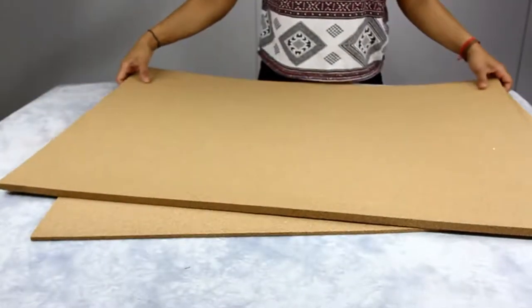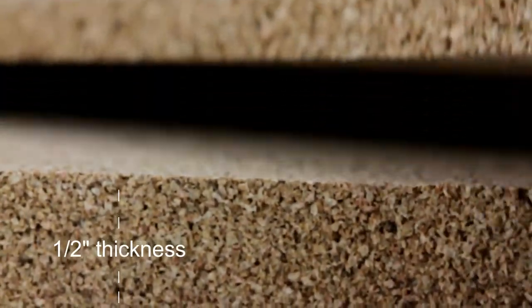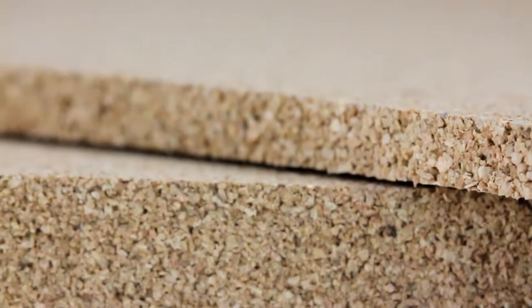Cork sheets are pre-cut 36 by 24 inch and are available in half an inch thickness and one-fourth inch.